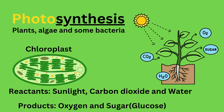This process takes place in the chloroplasts of these organisms and uses the following reactants: sunlight, carbon dioxide, and water. The byproducts are oxygen, which is necessary to sustain life here on Earth, and sugar, which is needed to be used as a fuel.